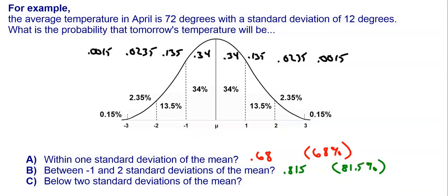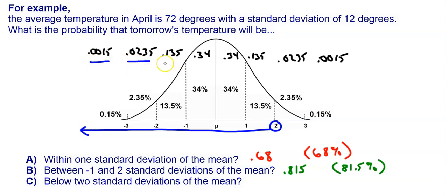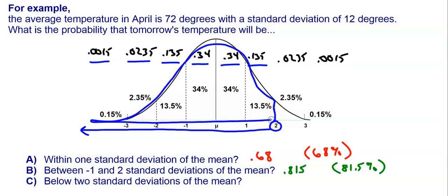For the last one, what is the probability that tomorrow's temperature will be below two standard deviations of the mean? We're looking at all six sections to the left of two. Adding up the areas: 0.0015, 0.0235, 0.135, 0.34, 0.34, and 0.135. When you add those up, the area is 0.975, or there's a 97.5% chance that tomorrow's temperature will be below two standard deviations of the mean.